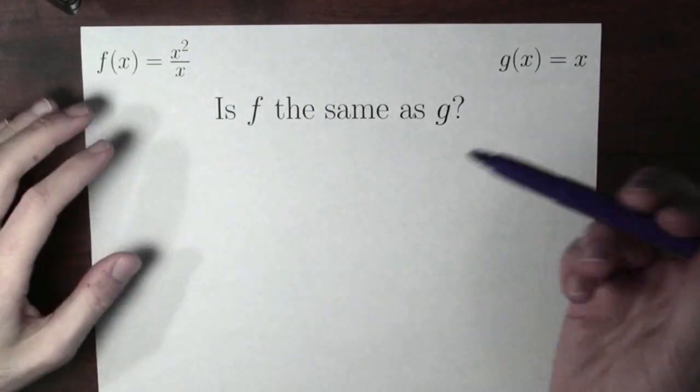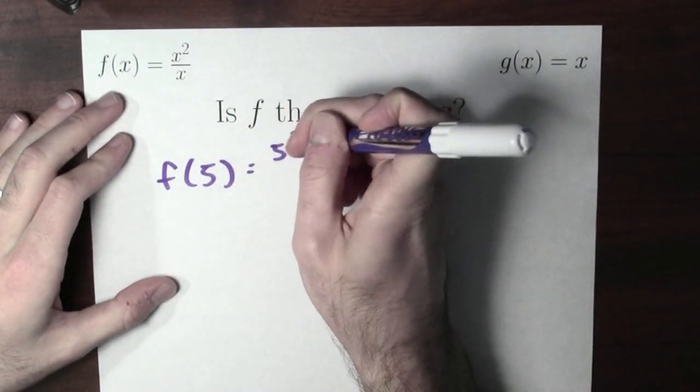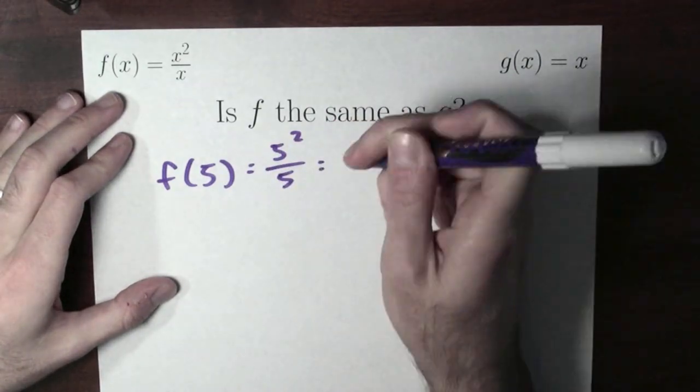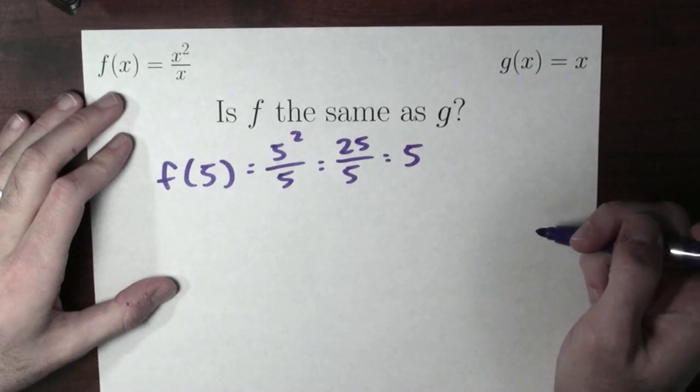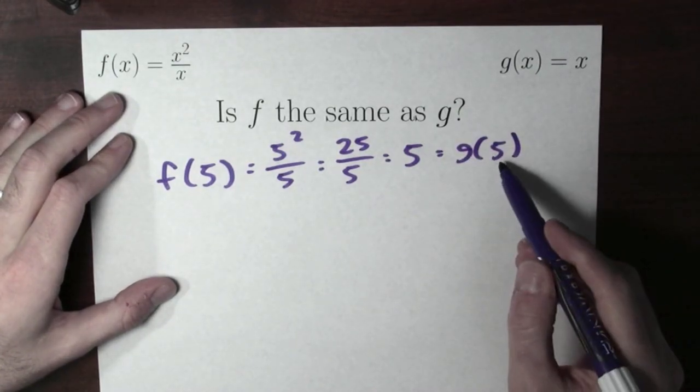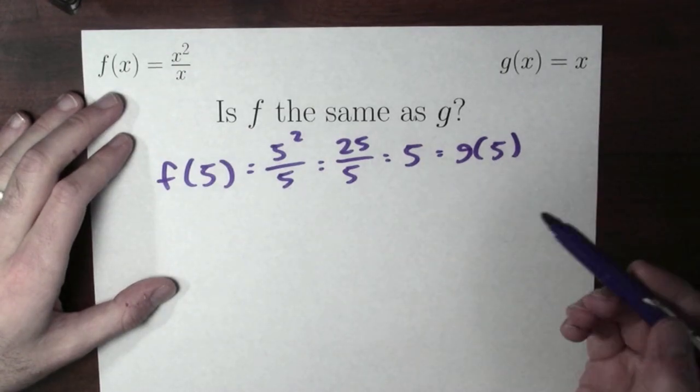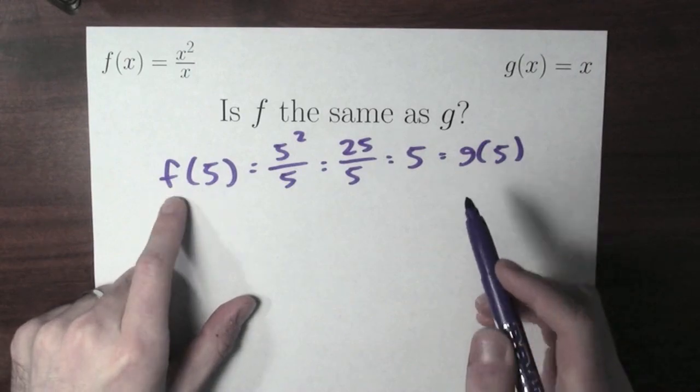Let's just pick some value to get a first test. Let's take a look at f of 5. f of 5 would be 5 squared over 5. That's 25, 5 squared divided by 5. That's 5. Well, that's the same as g of 5. If I plug anything into g, I just get the same thing out. So plug in 5, get out 5. So at least at the value 5, f and g agree.